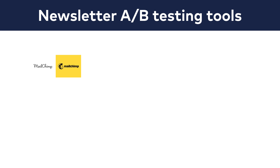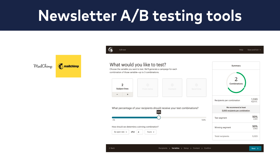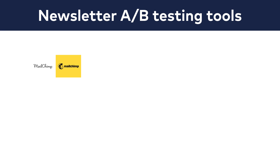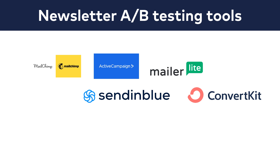Now let me talk about the newsletter and advertisement A/B testing tools. This will be easy, because whichever tool you use for sending newsletters or creating PPC ads, most probably it will have a built-in A/B testing solution in it already. For instance, I use MailChimp for sending newsletters, and with just a couple of clicks I can send out an A and a B variation of my newsletters if I want to. The same applies for all popular newsletter services: ActiveCampaign, MailerLite, Sendinblue, ConvertKit, and so on.